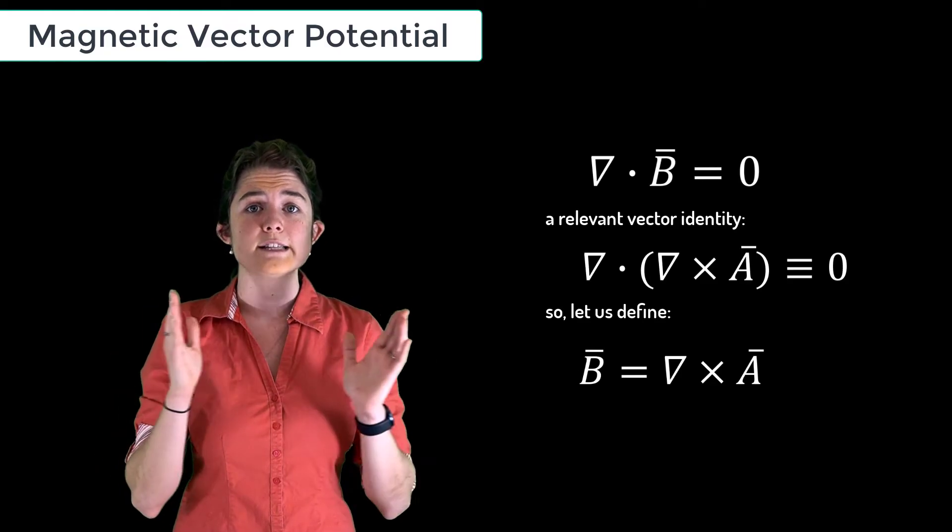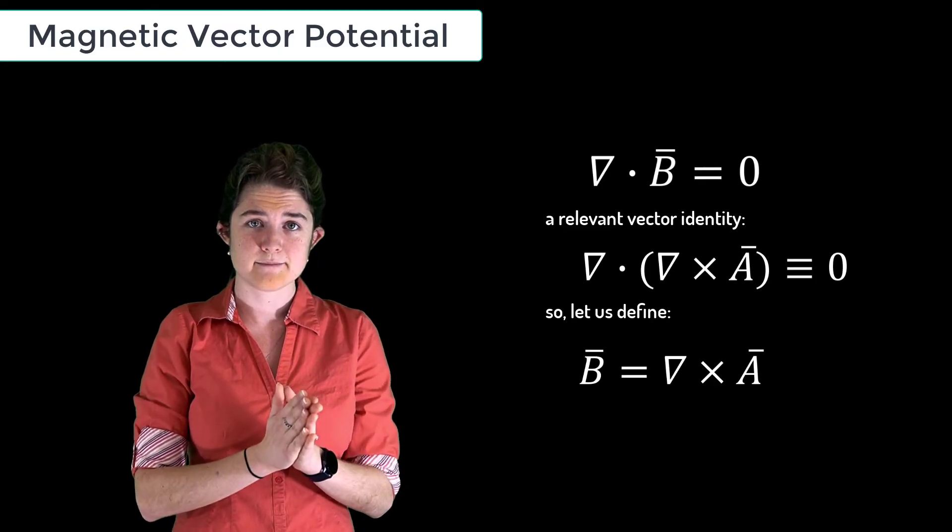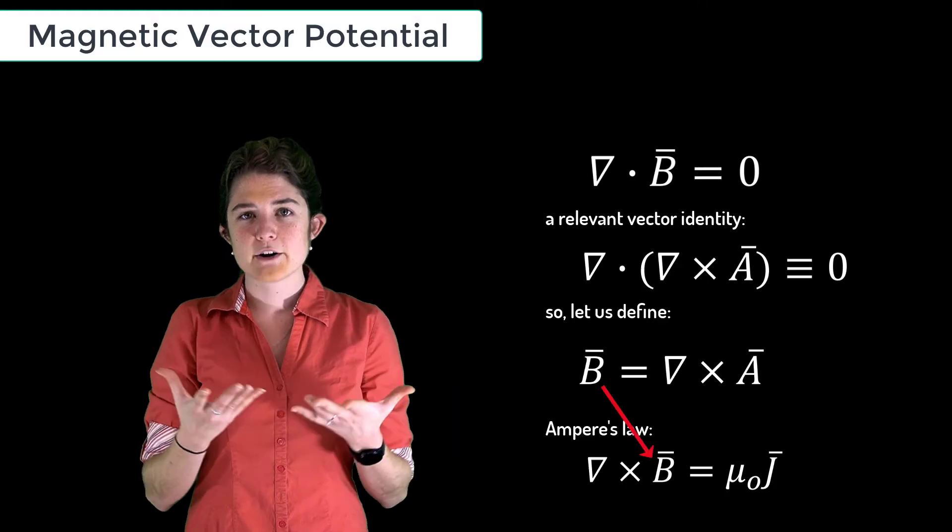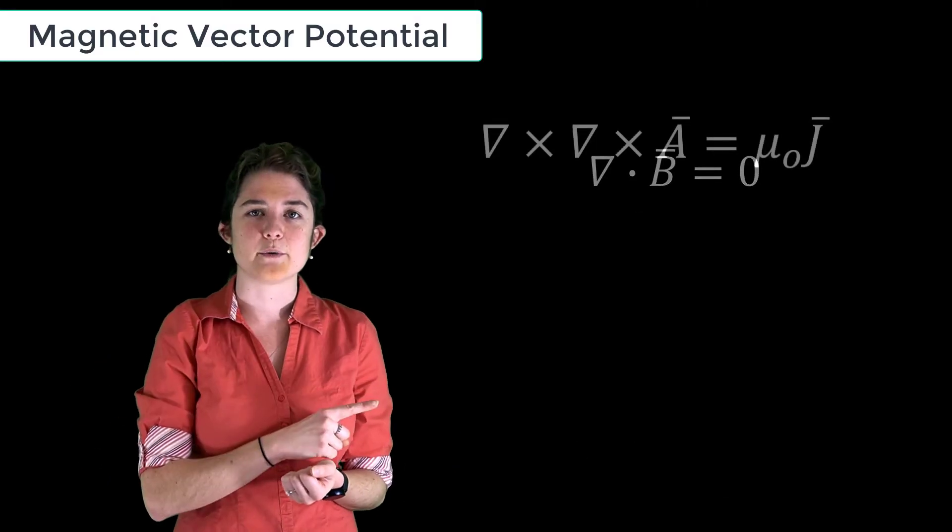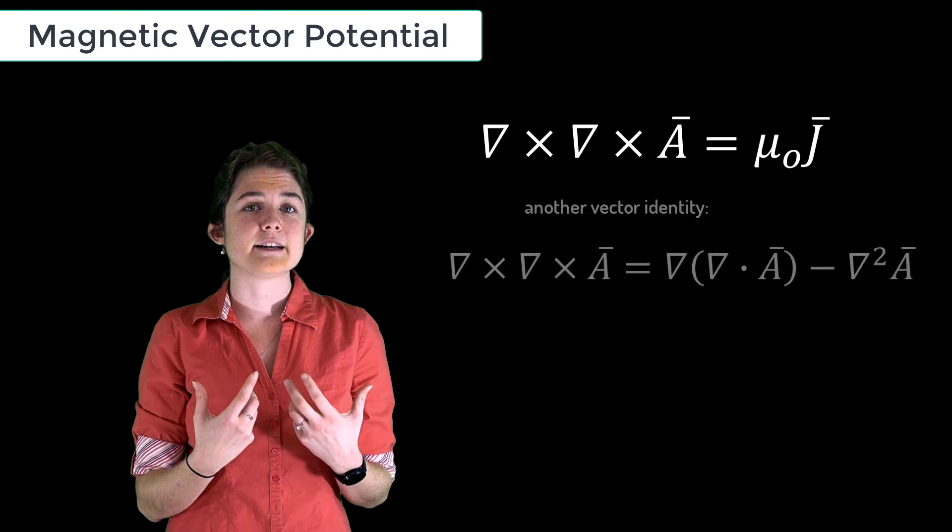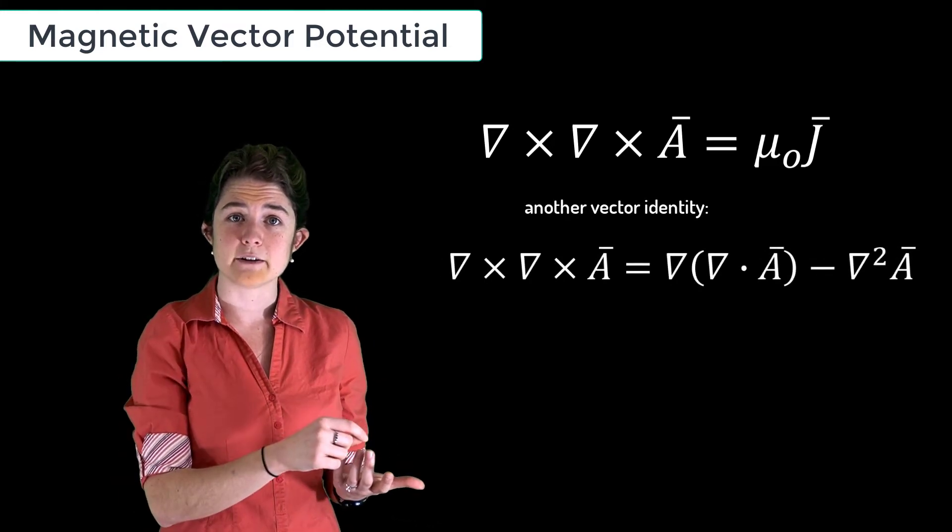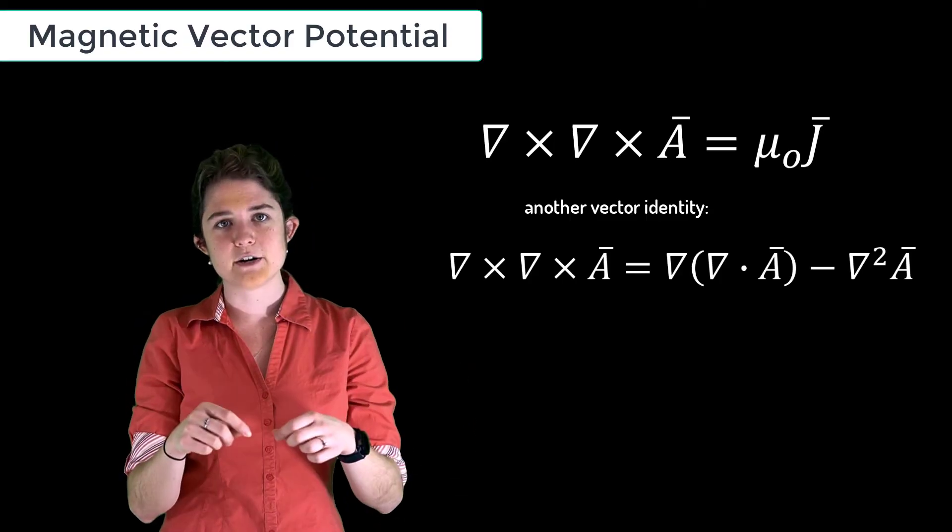The other law that applies here is Ampere's law. If we plug our vector field A into Ampere's law, we get this equation. Another vector identity applies here, which says that the curl of the curl of a vector field equals the gradient of its divergence minus its vector Laplacian, so we get this equation.